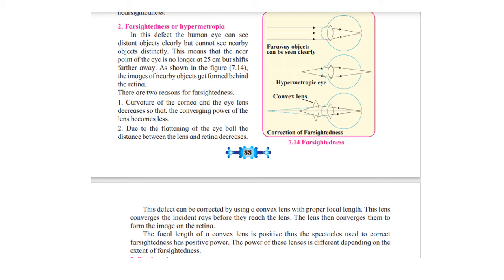Looking at the diagram: when rays come from a far object they fall properly on the retina, but from a nearby object the image is formed beyond the retina. This defect can be corrected by using a convex lens with proper focal length. The convex lens converges the incident rays before they reach the eye lens, which then forms the image on the retina. The focal length of a convex lens is positive, so spectacles with positive power are used.